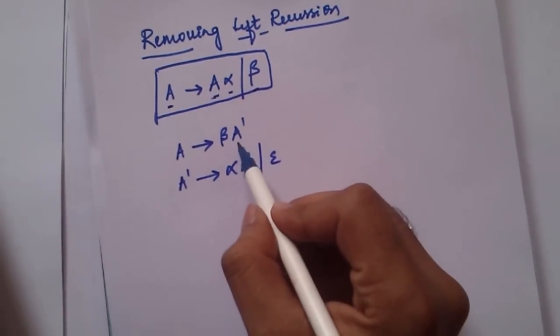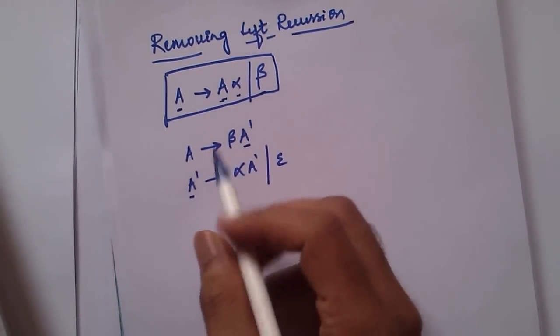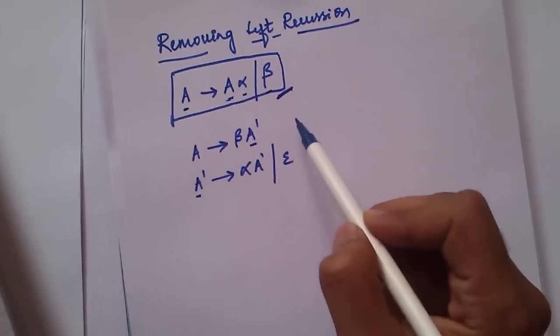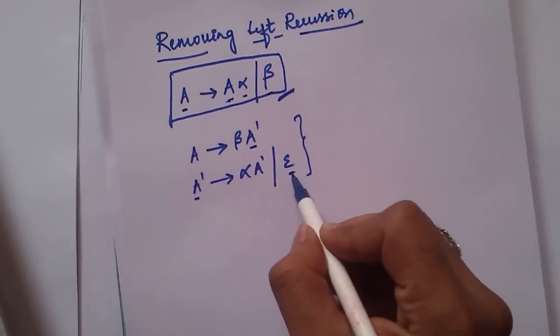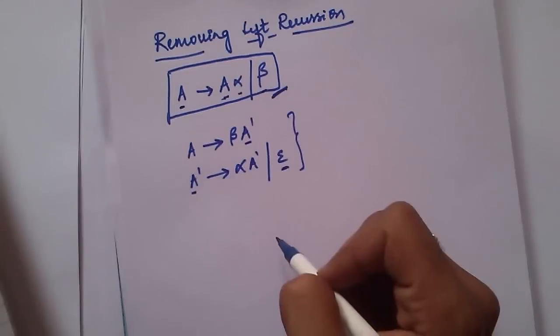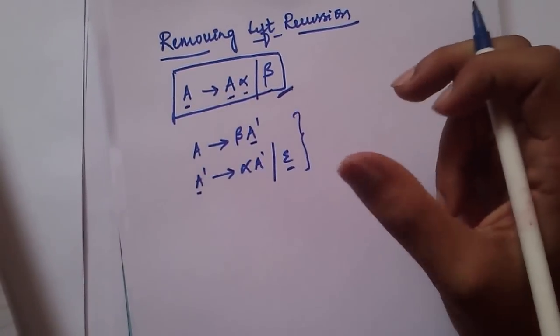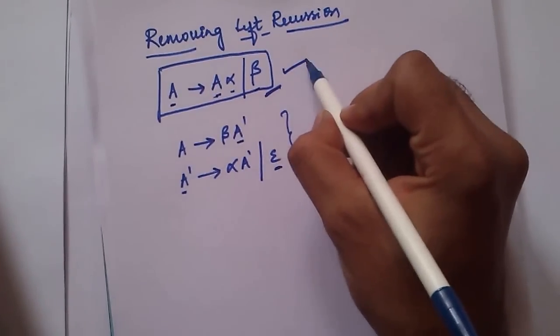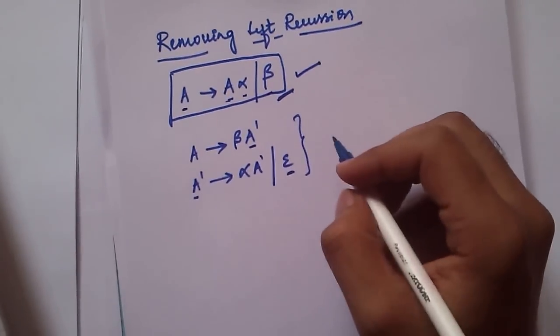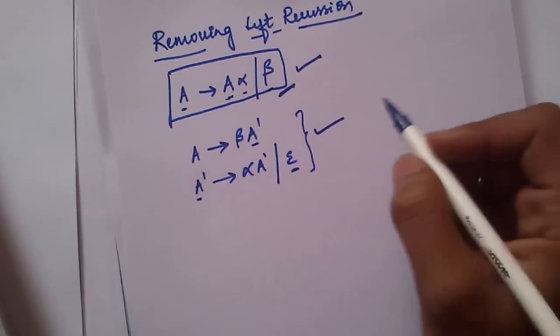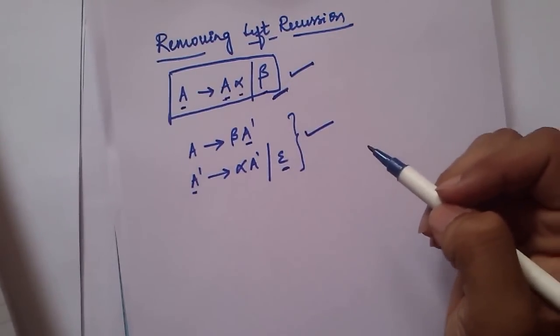This A' is a new non-terminal which we are introducing in the production, and we are splitting this production into two with a null here. So the basic idea is: whatever strings this grammar generates, the same strings are also generated by this transformed grammar. That's it. I will explain with an example in my next video. Thank you.